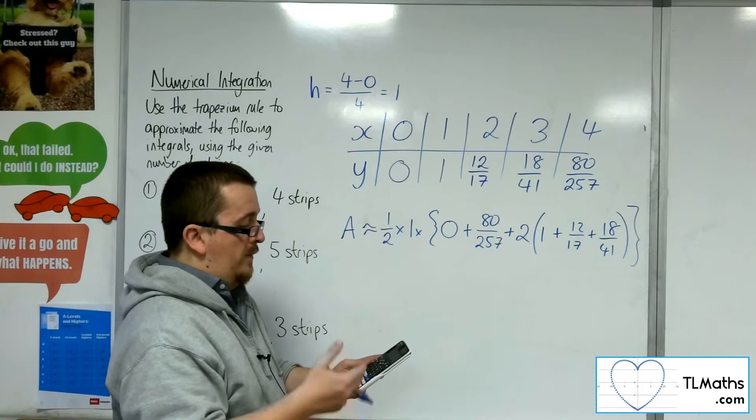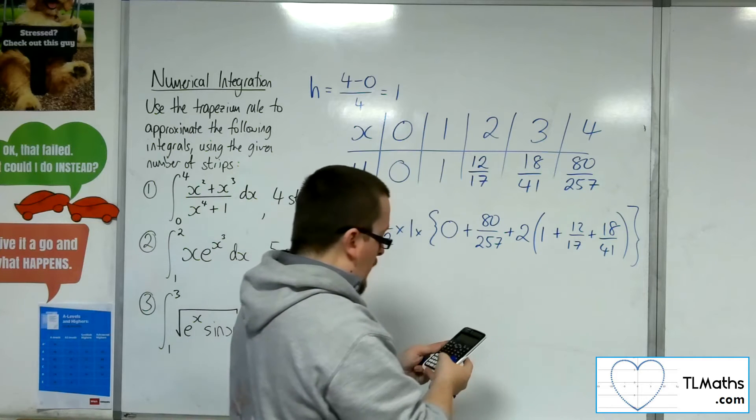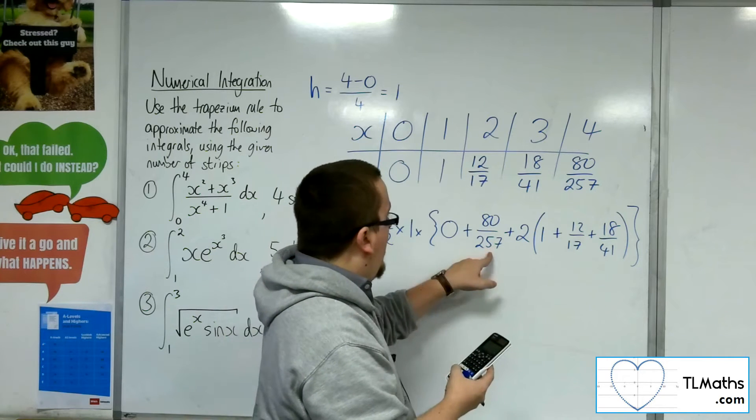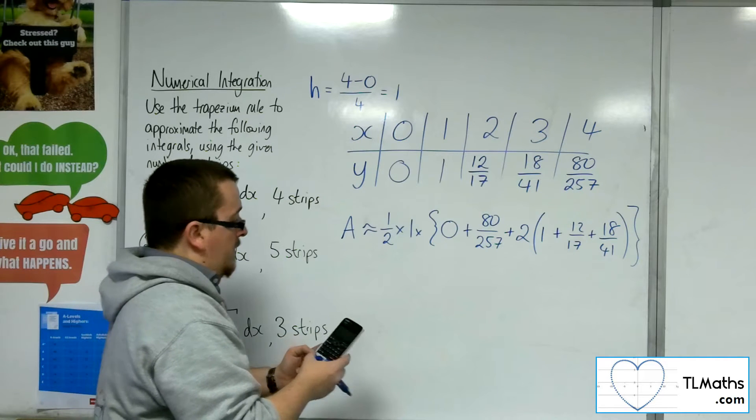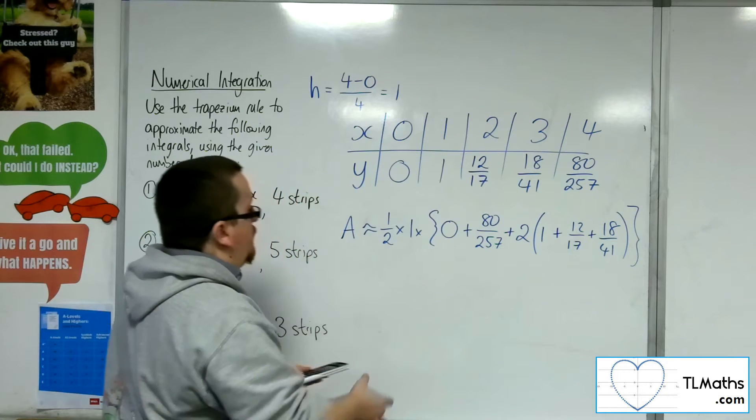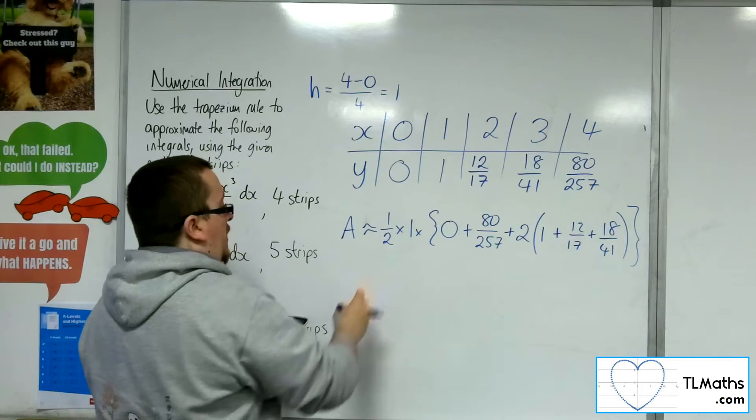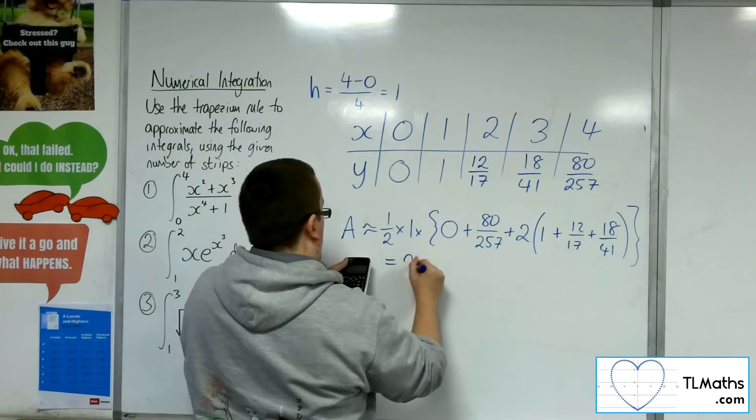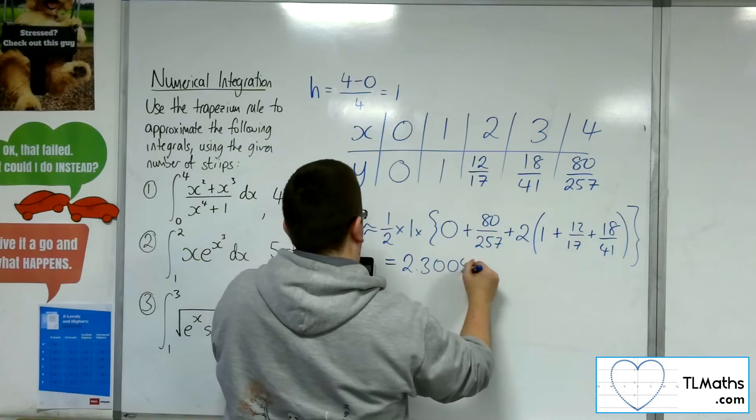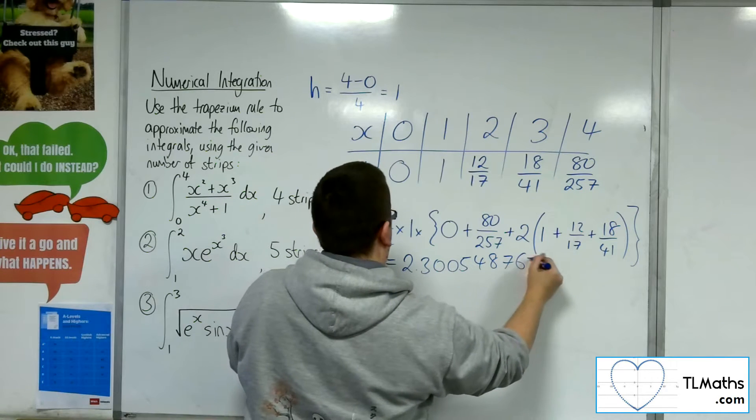So one plus twelve over 17 plus 18 over 41. So 1495 over 697. Double that. Add on the 80 over 257. Add on the zero, makes no difference. Times it by one, times it by a half.